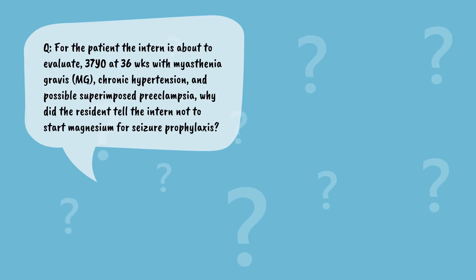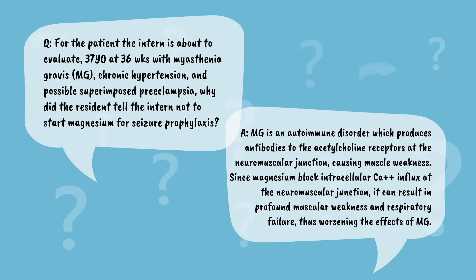For the patient the intern is about to evaluate, 37 years old at 36 weeks, with myasthenia gravis, or MG, chronic hypertension, and possible superimposed preeclampsia, why did the resident tell the intern not to start magnesium for seizure prophylaxis? MG is an autoimmune disorder which produces antibodies to the acetylcholine receptors in the neuromuscular junction, causing muscle weakness. Since magnesium blocks intracellular calcium influx at the neuromuscular junction, it can result in profound muscular weakness and respiratory failure, thus worsening the effects of MG. I still have so much to learn.